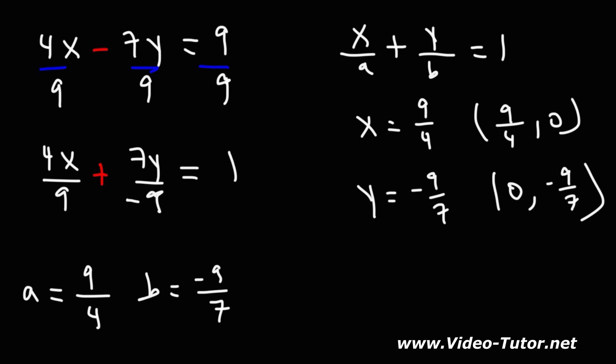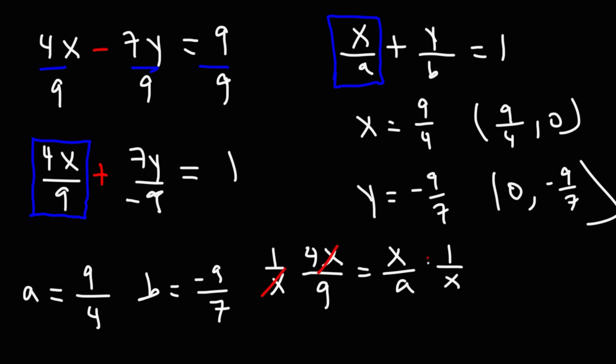Now, if you want to show your work as to why a is this number, here's what you can do. You can set this portion of the equation equal to x over a and solve for a. Let's do that. So if I set 4x over 9 equal to x over a, if I multiply both sides by 1 over x, I could cancel the x variables. So I'm left with 4 over 9 is equal to 1 over a. Now, what you can do is raise both sides to the negative 1 power, which will cause the fractions to flip. On the left, 4 over 9 becomes 9 over 4. On the right, 1 over a becomes a over 1, which a over 1 is the same as a. So you get a is 9 over 4, which is what we have. So that's how you can show your work to prove that a and b are these values.